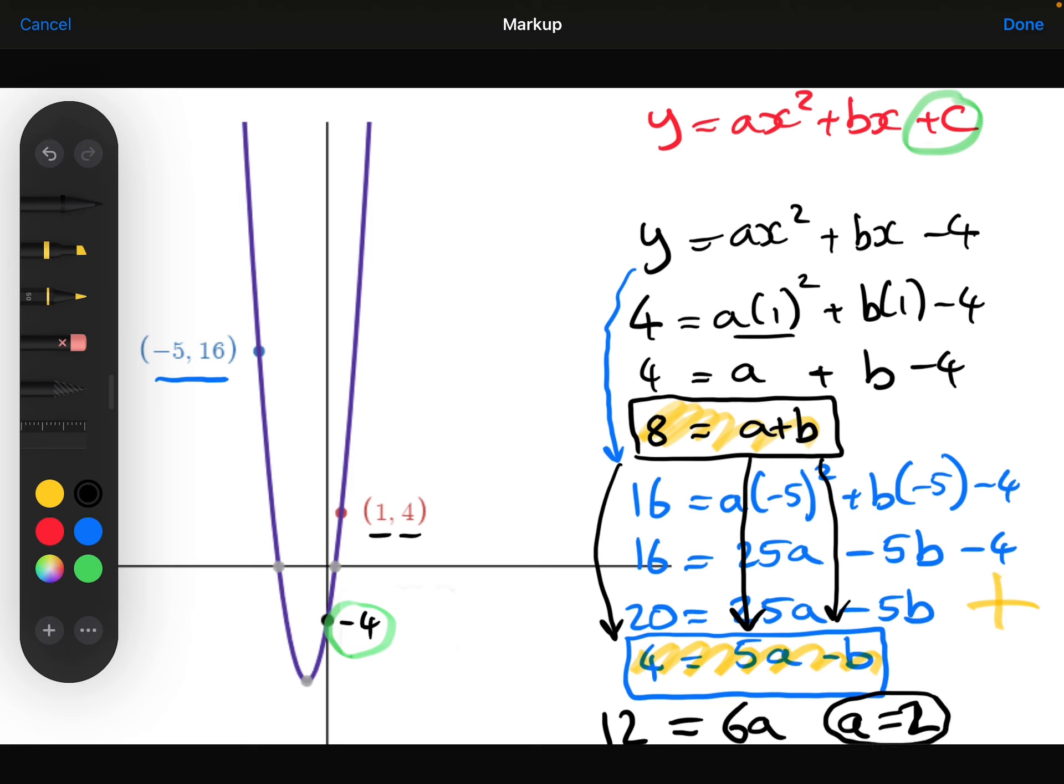And now I know a is 2, I can substitute that back. Probably easiest to substitute it back into here. So the 8 is equal to 2 plus b. So b is 6. And now I know what a, b and c are. I know that a is 2, b is 6, and the c is minus 4. So this is the equation of that curve.